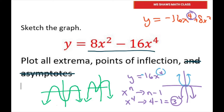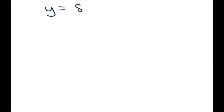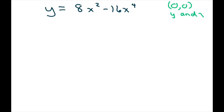Now let's go ahead and find our x and y intercepts. We have y = 8x² − 16x⁴. For our y-intercept, that's when x is zero and we just get y equals zero. So that's both your y and x intercept — anytime you have (0, 0) it's both x and y intercepts.